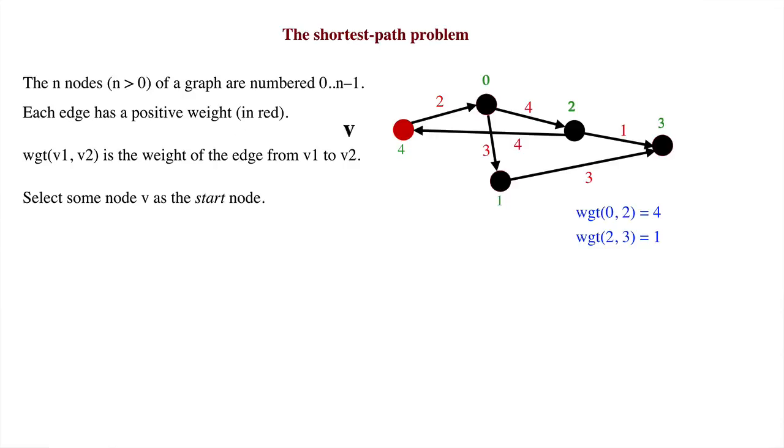Node V is designated as the start node. In this case, V is the red node on the left, so V is 4.